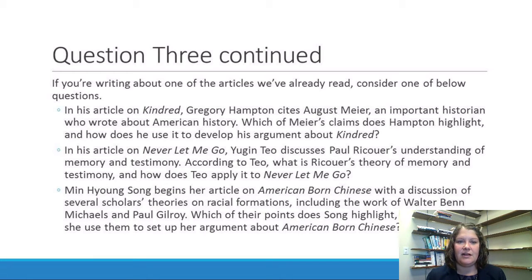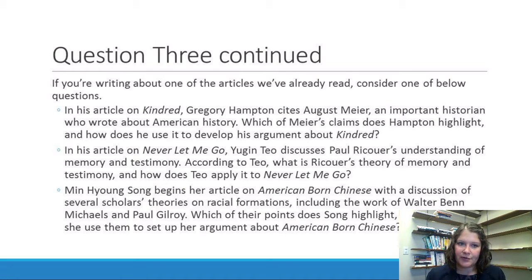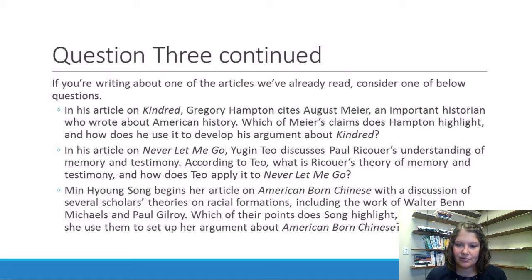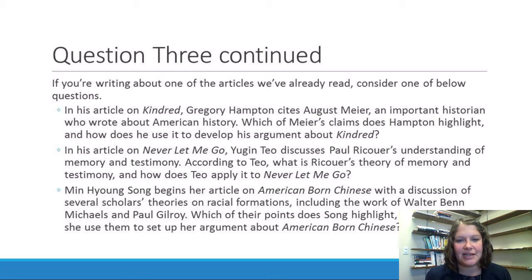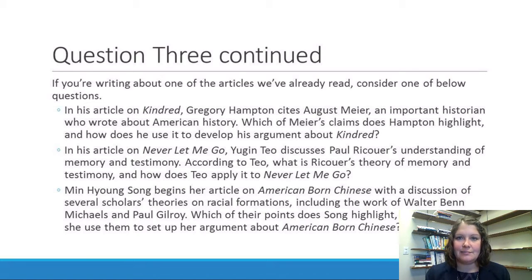If you choose to write on Eugene Teo's article on Never Let Me Go, I want you to especially think about what he says about Paul Ricoeur. In his article, Eugene Teo discusses Paul Ricoeur's understanding of memory and testimony. According to Teo, what is Ricoeur's theory of memory and testimony? And how does Teo apply it to Never Let Me Go? I want you to identify what Teo thinks is important about Ricoeur's ideas, and then how he applies those ideas to the novel.